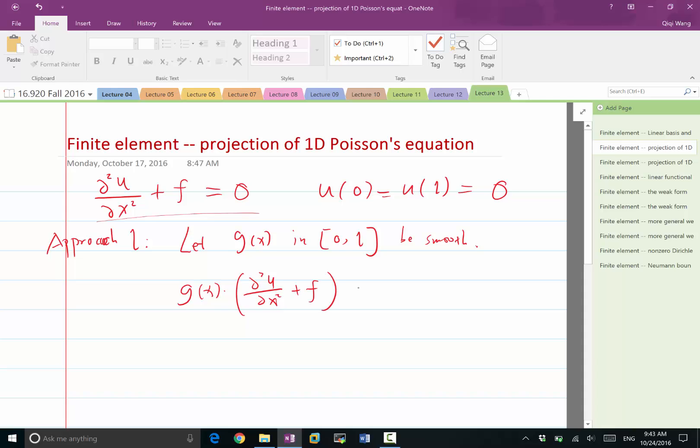So this should be equal to 0 within the whole domain. And because this function is 0 within the whole domain of 0, 1, the integration of this function over space should be equal to 0 for any smooth function g. So basically, what I'm going to do is this has to be true for any g.